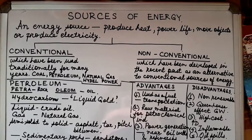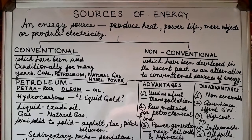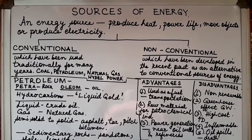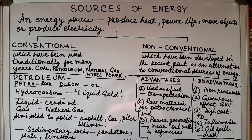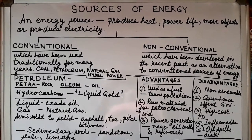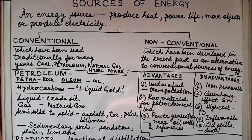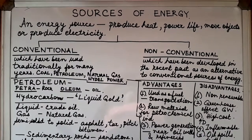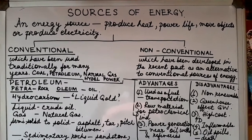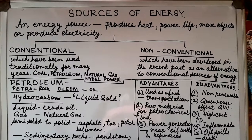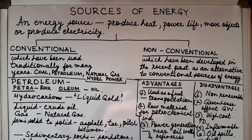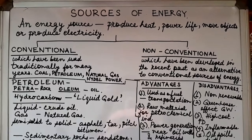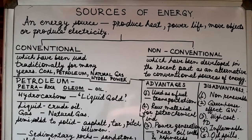Hello students, today we are going to begin with the topic sources of energy. An energy source is something that produces heat, powers life, moves objects, or produces electricity. There are two kinds of sources of energy: conventional sources and non-conventional sources. Chapter 13 in our book deals with conventional sources of energy and chapter 14 deals with non-conventional sources.